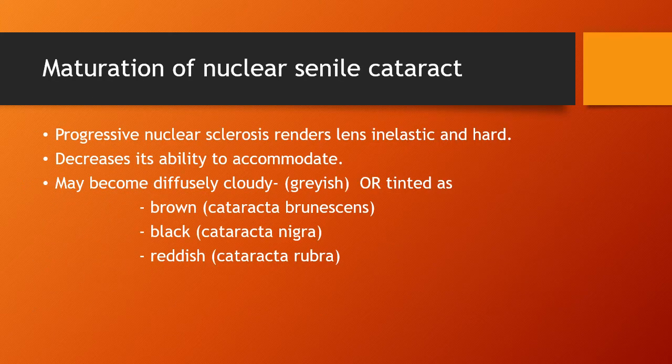Coming to the maturation of nuclear senile cataract — progressive nucleus sclerosis makes the lens inelastic and becomes hard. There is decrease in the ability to accommodate and the lens may become diffusely cloudy or tinted. Tinted nucleus can be of brown, black, or reddish color. Accordingly, the cataracts are named as cataracta brunescens, cataracta nigra, and cataracta rubra.